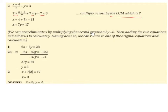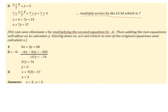We can eliminate x by multiplying the second equation by minus 6, then adding the two equations to calculate y. Equation 1 is 6x plus 5y equals 28. Multiplying equation 2 by minus 6: x becomes minus 6x, 7y becomes minus 42y, and 17 becomes minus 102. Adding: 6x minus 6x cancels out. 5y minus 42y is minus 37y, and 28 minus 102 is minus 74.